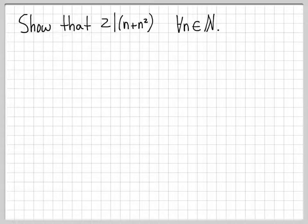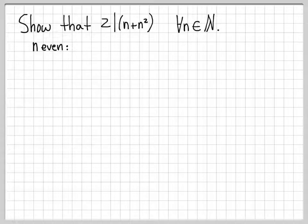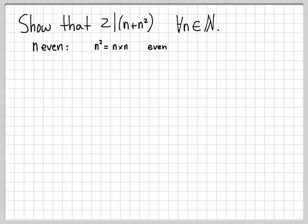This is not a difficult proof to do. You can actually do a direct proof fairly easily to show that's true. For example, you could break the natural numbers into evens and odds to cover both cases. When n is even, then we know that n squared, which is n times n, would be the product of an even times an even, which itself would be an even number.